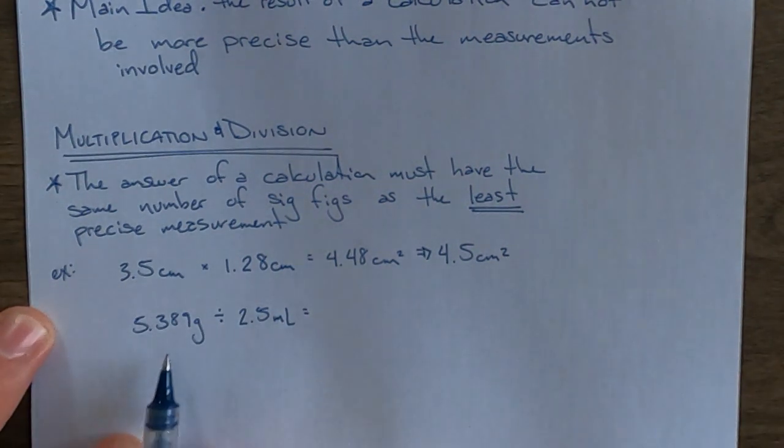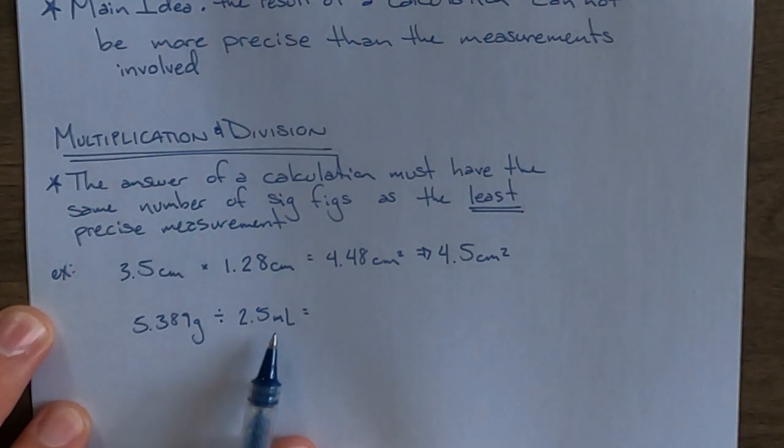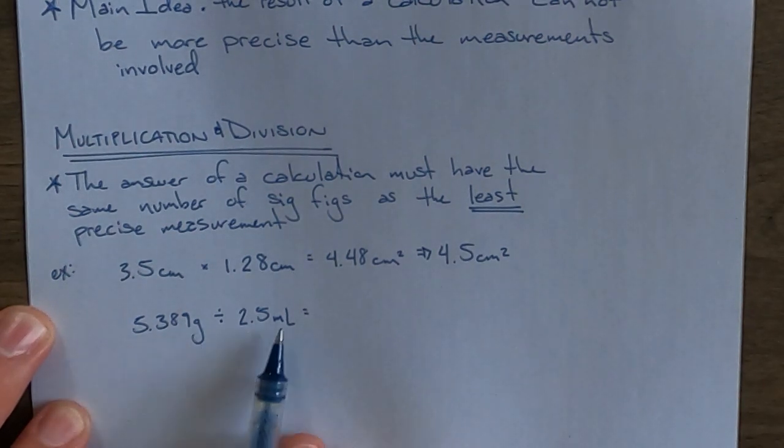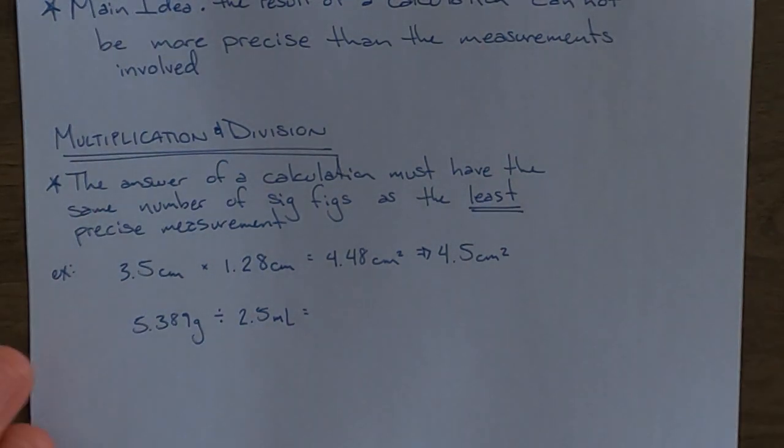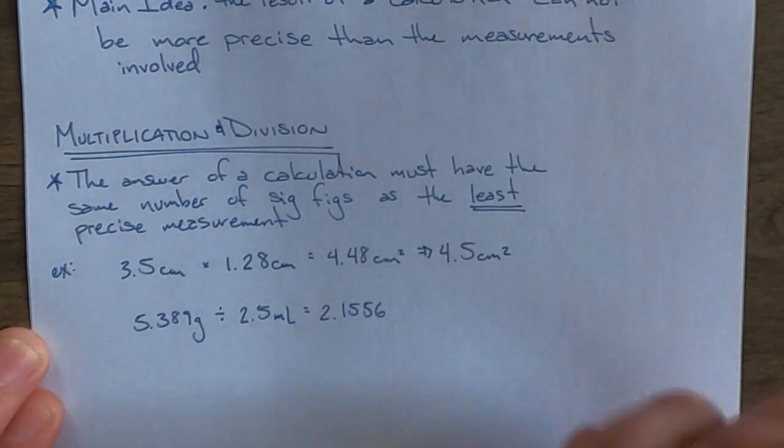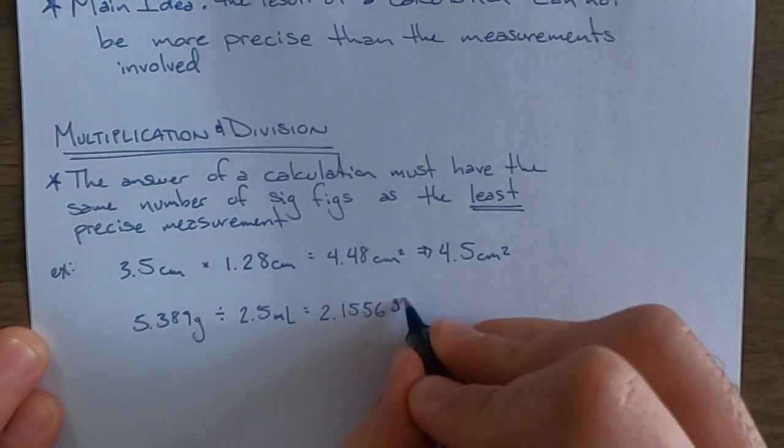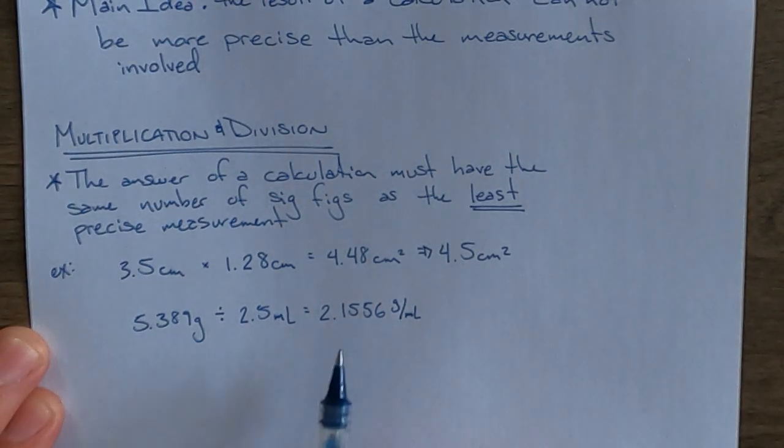If you have a piece of an object that weighs 5.389 grams and it takes up 2.5 milliliters of space, the density of it you would divide the grams by the number of milliliters and you would get an answer using your calculator of 2.1556. Here the units, because it's grams divided by milliliters, would be grams per milliliter.